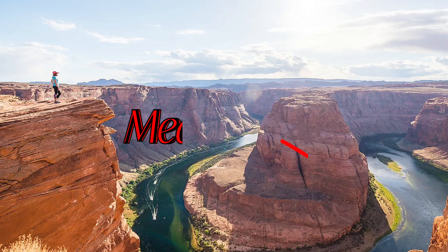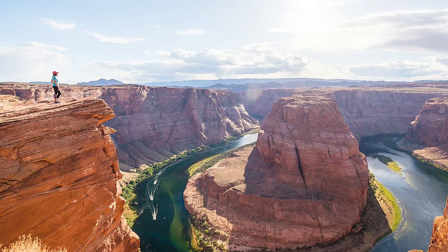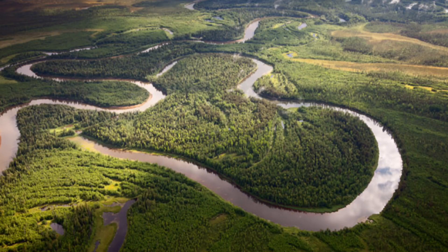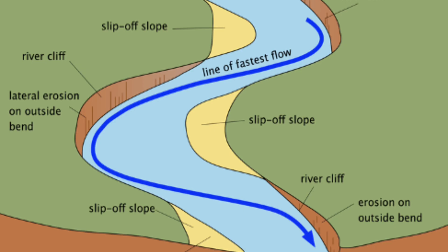This is a river bend or a meander. Although meanders may seem very simple at first, they have a lot of geographical science behind them. They're formed by a type of erosion called lateral erosion.